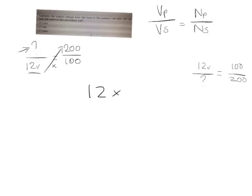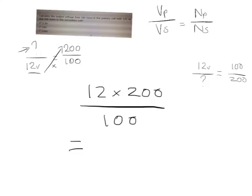We can rewrite the formula as 12 times 200, and then divide that whole number by 100. The answer to that is 24. And since we're finding the voltage, the unit is volts. So looking back at the question — to calculate the output voltage from 100 turns in the primary coil with 12 volts AC and 200 turns in the secondary coil — our answer is B: it is 24 volts.